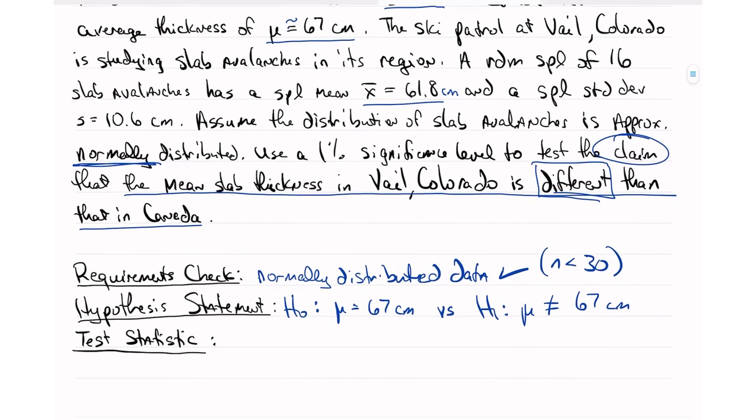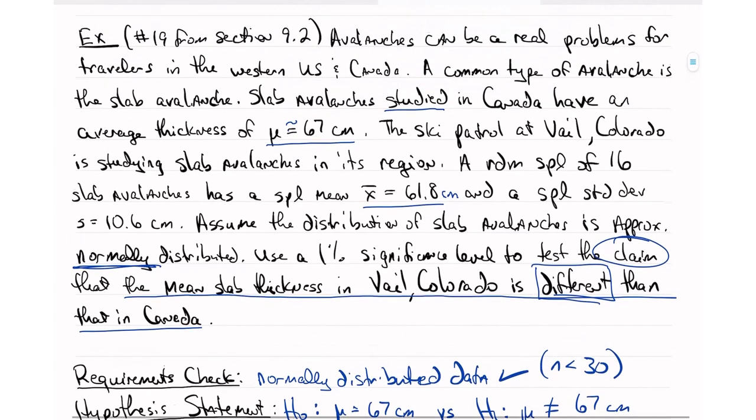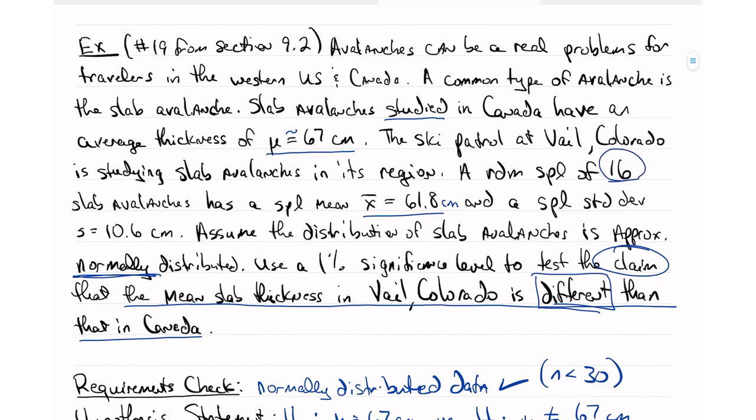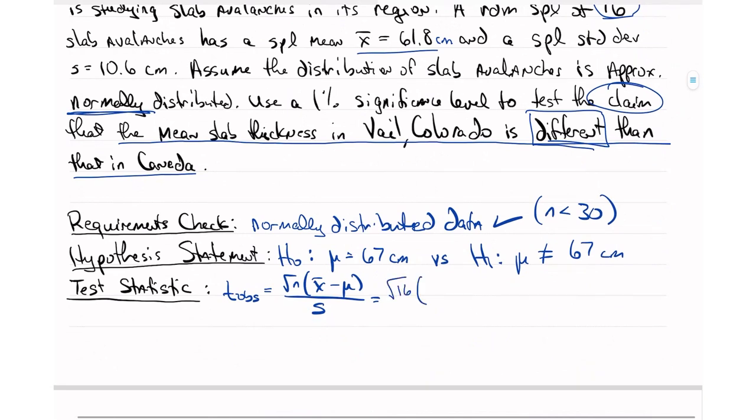Now our test statistic is going to be the same. It's still T observed equals square root of N, X bar minus mu over S. So let's fill that in and get the value. So here we had a sample of 16. So N equals 16. So I'm going to take the square root of 16, then I need X bar and that is 61.8 centimeters minus mu, which is given in our null hypothesis, 67, divided by S and S is given here as 10.6.